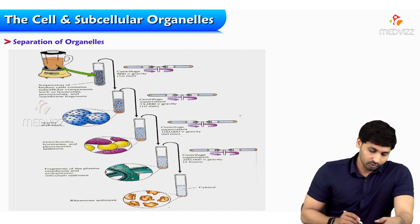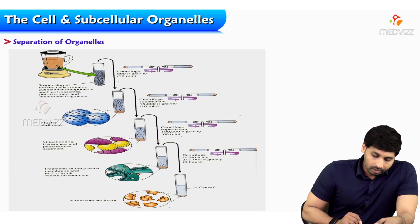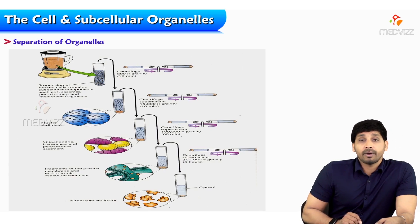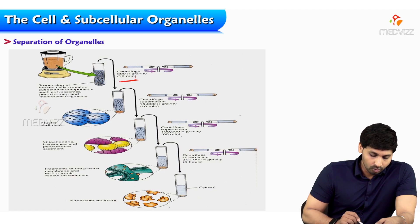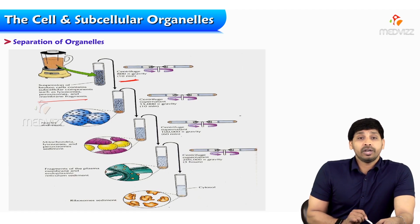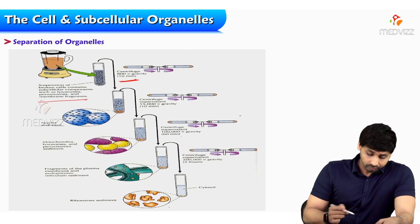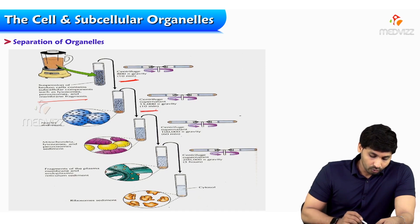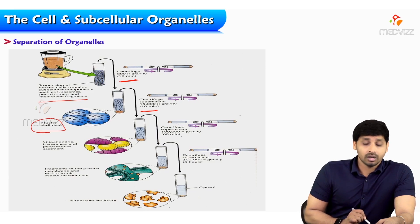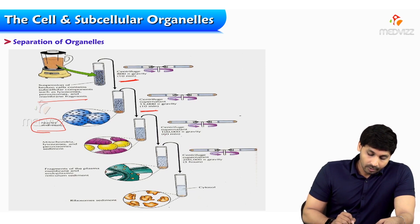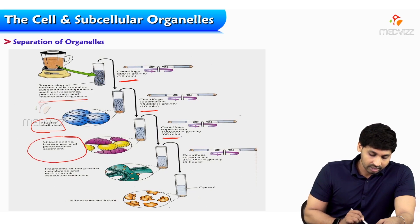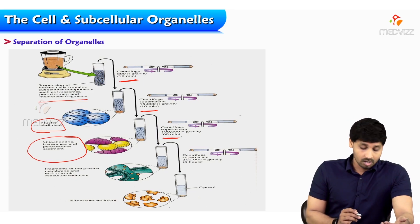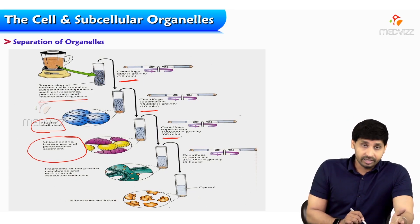By applying centrifugal force, different subcellular organelles are isolated at different centrifugal rates. For example, at 800 rotations per minute for 10 minutes, you isolate membrane fragments and cell membrane. At 13,000 rotations per minute for 10 minutes, you isolate the nucleus. At 1 lakh rotations per minute for 60 minutes, you can isolate subcellular organelles like mitochondria, lysosomes, and peroxisomes.